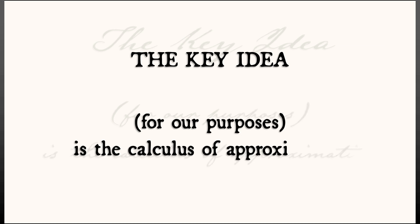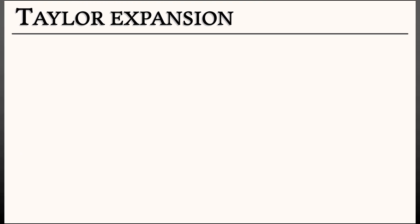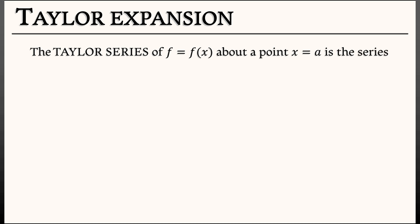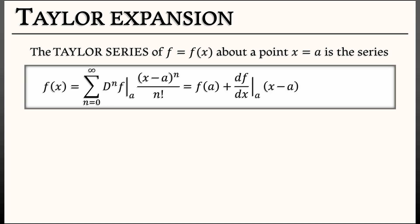When it comes to calculus, the key idea for our purposes is going to be the calculus of approximation — approximating functions by polynomials. This is, you guessed it, Taylor expansion. Recall that the Taylor series of a function f with input x about x equals a is the following series: f of x is the sum as n goes from 0 to infinity of the nth derivative of f at a, times quantity x minus a to the n, all over n factorial. Expanding that out, we get the zeroth order term f at a, plus the first order term — derivative of f with respect to x at a, times quantity x minus a — and then all the terms of order two and higher in quantity x minus a.